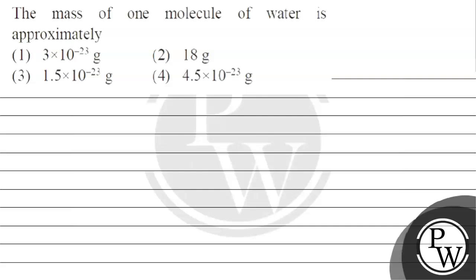Let's read this question. The question says: mass of one molecule of water is approximately — option 1: 3×10⁻²³ gram, option 2: 18 gram, option 3: 1.5×10⁻²³ gram, option 4: 4.5×10⁻²³ gram.